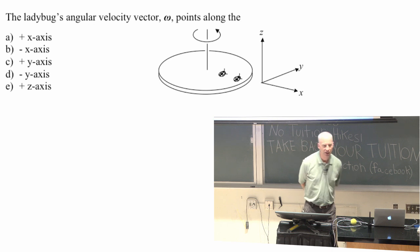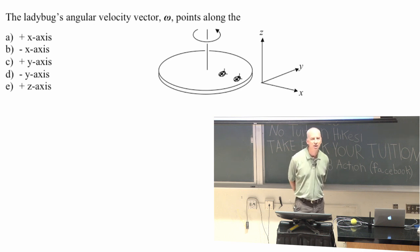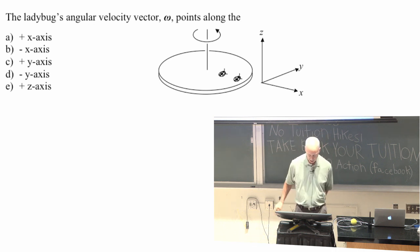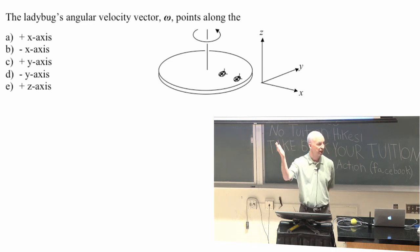So here's a question I haven't asked you yet. There's an angular velocity vector, and I'd like you to tell me the direction of the angular velocity vector, however you can do it. But I would suggest you use a right hand rule.